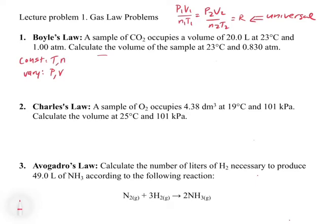We'll set up our equation from the universal gas law. Since the number of moles and temperature are held constant, we can drop those out. So for this problem, we can simply write P1V1 = P2V2. Now we just need to list our first and second condition values: P1, V1 for the first condition and P2, V2 for the second.